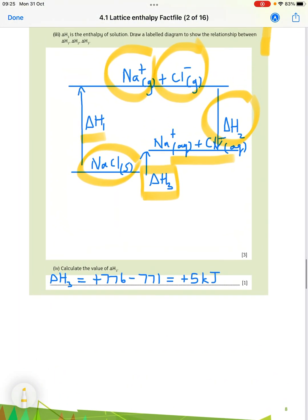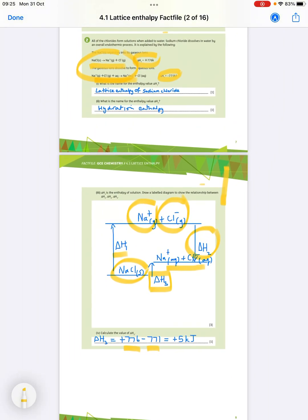Then the value of delta H3, delta H1 is plus 776. Delta H2 minus 771, the difference is plus 5.